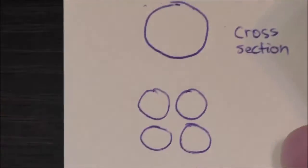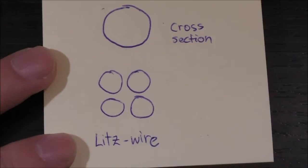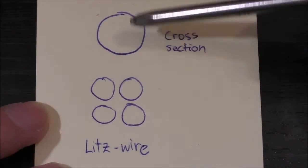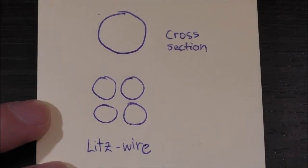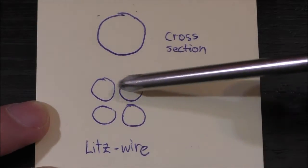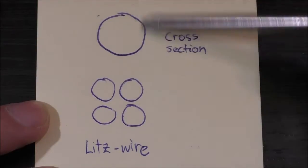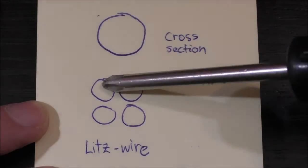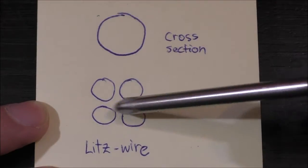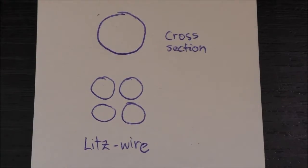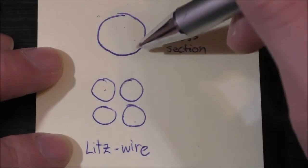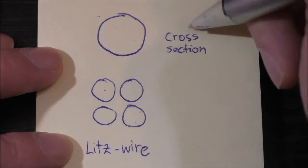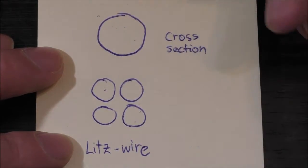So over here we have the cross section of a standard conductor. And in the litz wire construction, we actually made this larger conductor out of smaller, thinner diameter conductors. Now the total cross sectional area of these two wire bundles might be the same. So the total cost of copper would be the same. However, if we look at the surface, the outer surface area of the conductor...